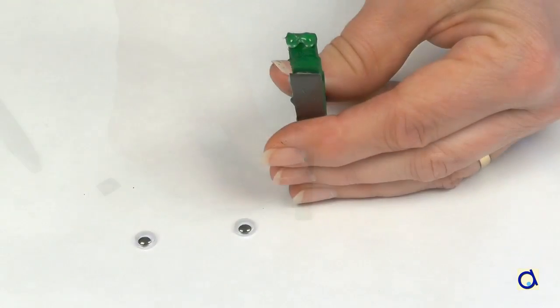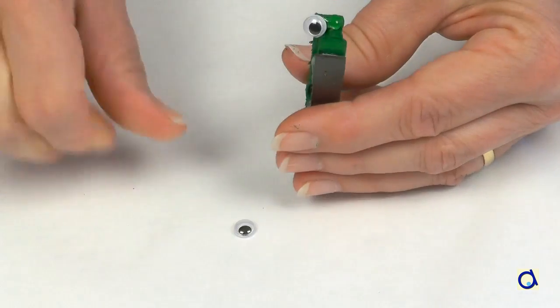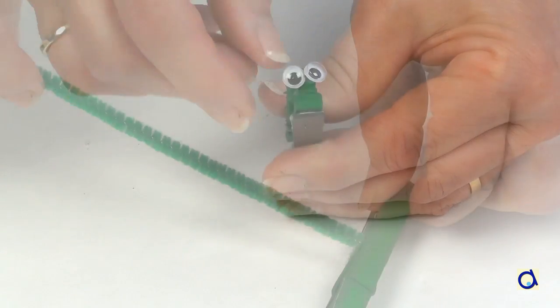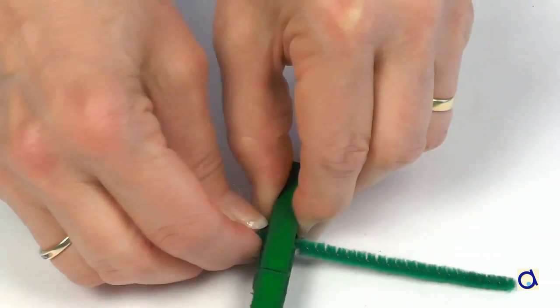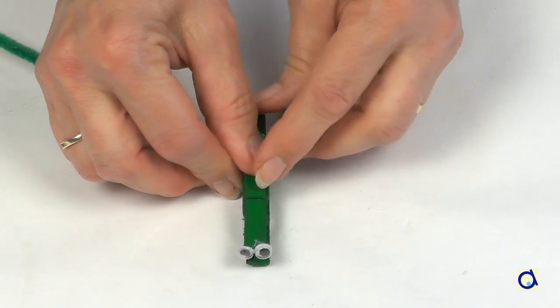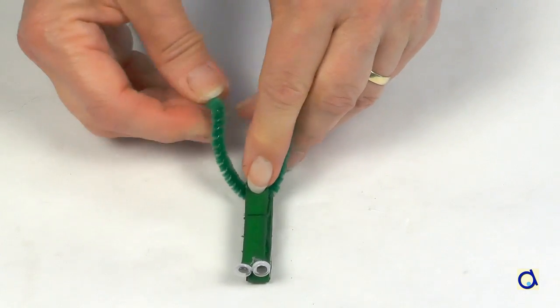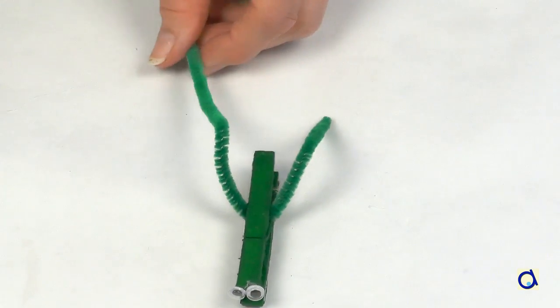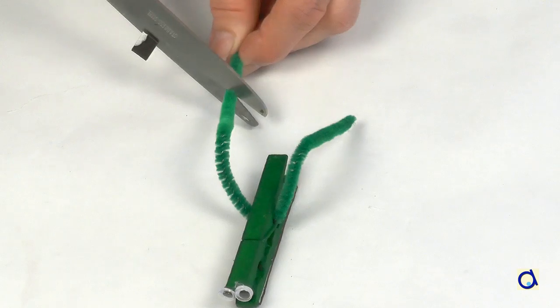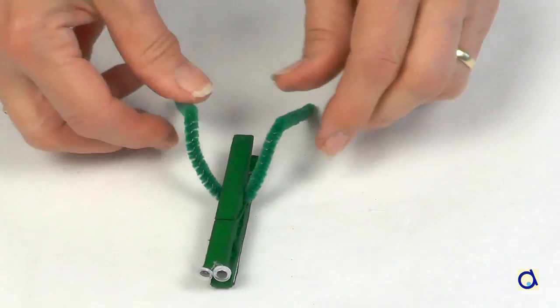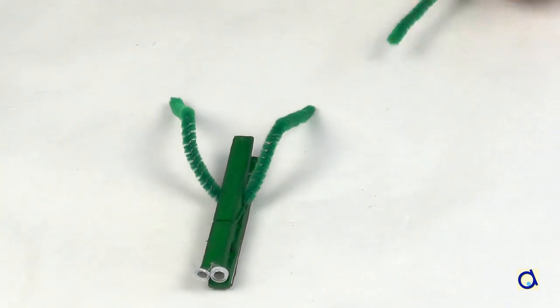Glue googly eyes on the front of the clothespin near the opening. First, take a rather long piece of pipe cleaner to represent the hind legs. Pass the pipe cleaner through the hole of the spring of the clothespin. Cut the pipe cleaner and bend the legs in the right position. The hind legs are rather long and allow the grasshopper to jump very far.